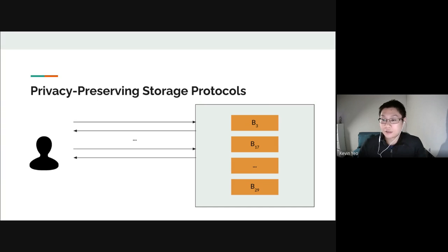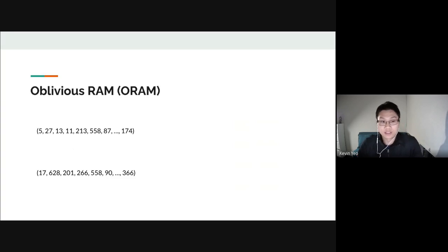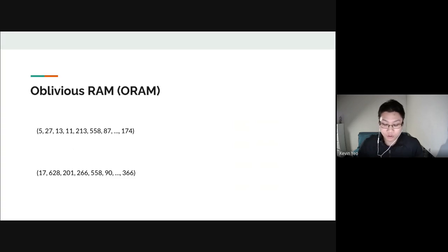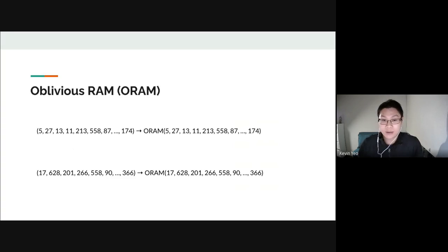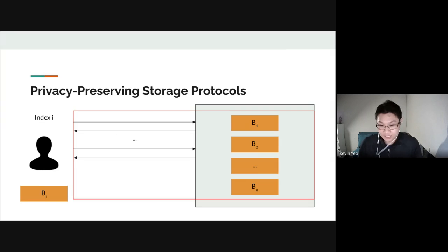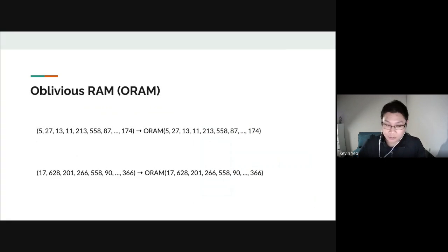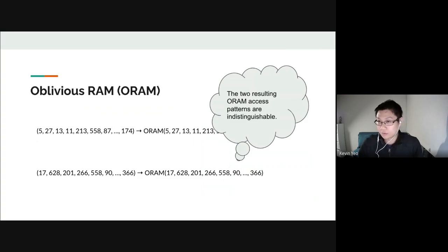In particular, we focus on the primitive called oblivious RAM. An oblivious RAM takes an access pattern and obfuscates it so that what the server sees — the ORAM access pattern, meaning whatever is stored in server memory and whatever accesses to encrypted memory are made — hides the original access pattern. For privacy, given any two access sequences of the same length, the resulting server's view is essentially indistinguishable.